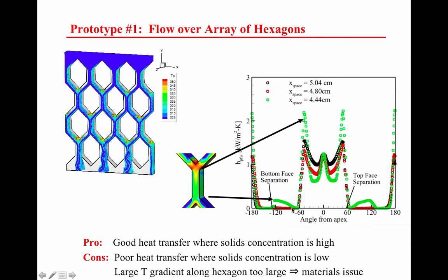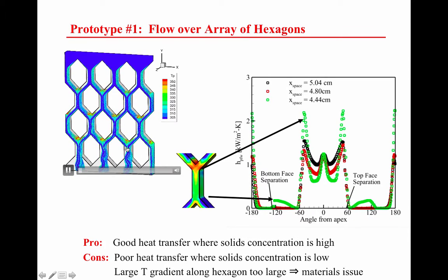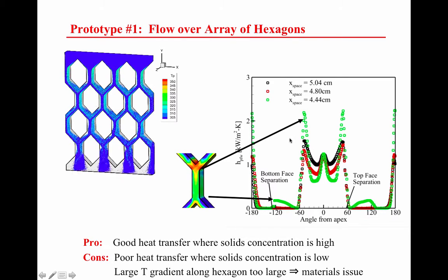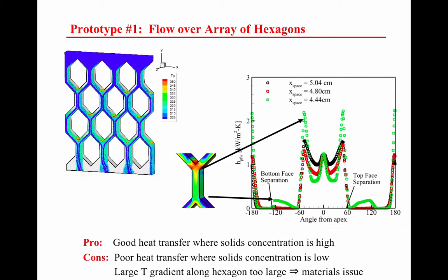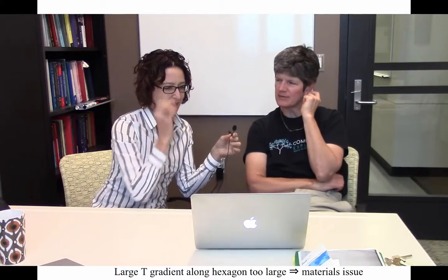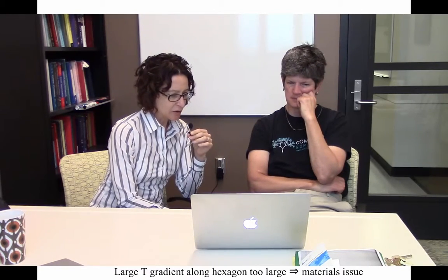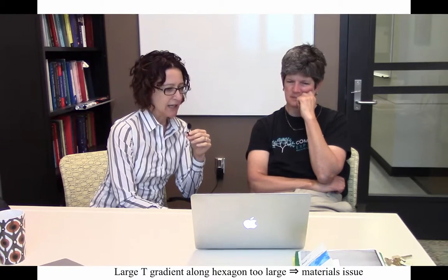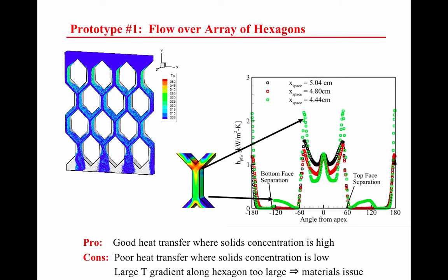That's something we learned from this first prototype using the mathematical model before we even built the unit. One of the cons we wanted to address was improving heat transfer on the sides and bottom of these heat transfer tubes. The sun radiates the inside of the tubes and makes them hot; the particles travel down over these hot tubes and get hot that way. Another con is that there are huge temperature gradients where heat transfer is really good on the top ramp versus lower down. That's a materials challenge because materials generally don't like large temperature gradients due to thermal expansion and contraction. The particles themselves are durable, but it's the tubes that were at risk.